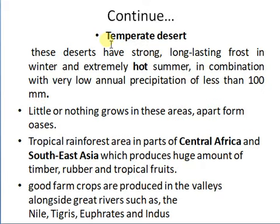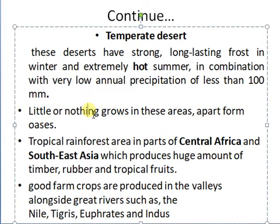Temperate deserts have strong long-lasting frost in winter and extremely hot summers, combined with very low annual precipitation of less than 100 mm. In these deserts there are extreme conditions in summers and winters as well, making them also unsuitable for vegetation. Little or nothing grows in these areas apart from oases — green lands in the desert area where some plants can be grown for day-to-day use.